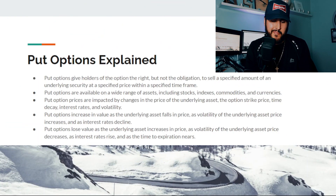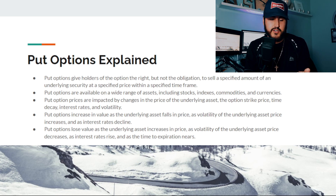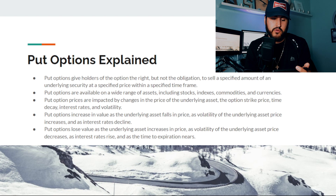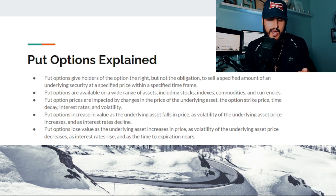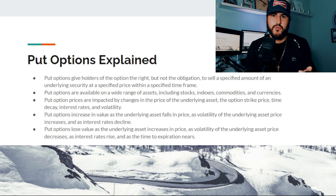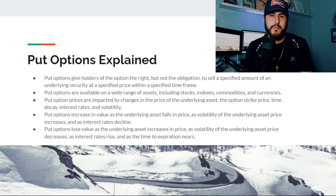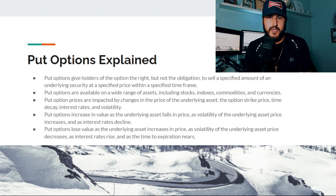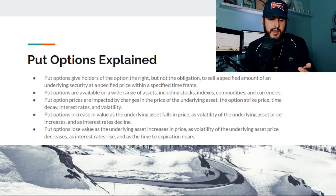Now let's go over put options. Put options give holders the right, but not the obligation, to sell a specified amount of an underlying security at a specified price within a specified timeframe. Put options are available on a wide range of assets including stocks, indexes, commodities, and currencies. Put option prices are impacted by changes in the underlying asset price, the strike price, time decay, interest rates, and volatility. Put options increase in value as the underlying asset falls in price — you make money betting the stock goes down.